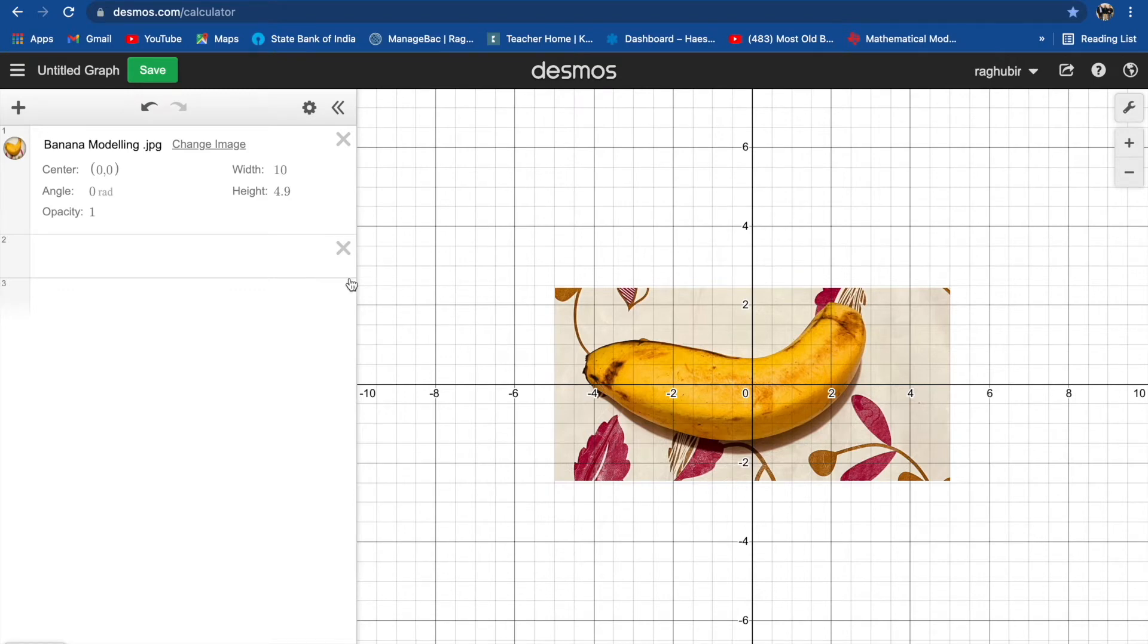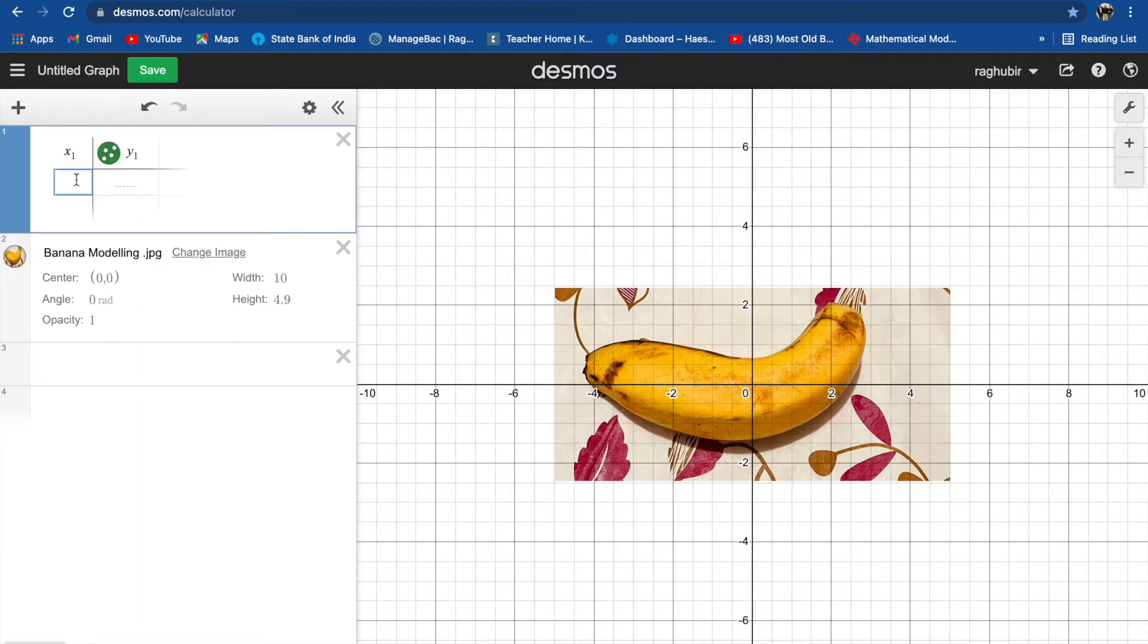Now again press the add button, enter table. We have to enter at least 10 best fitting X and Y values. X is the width, Y is the height.